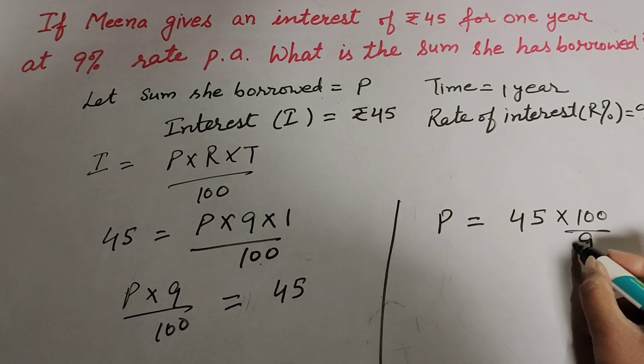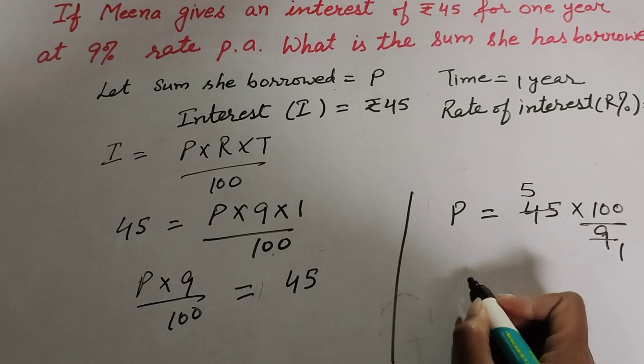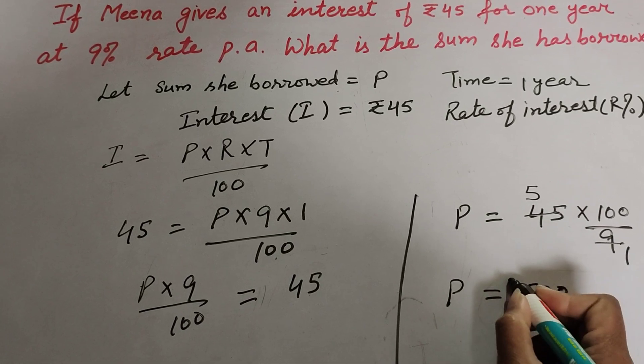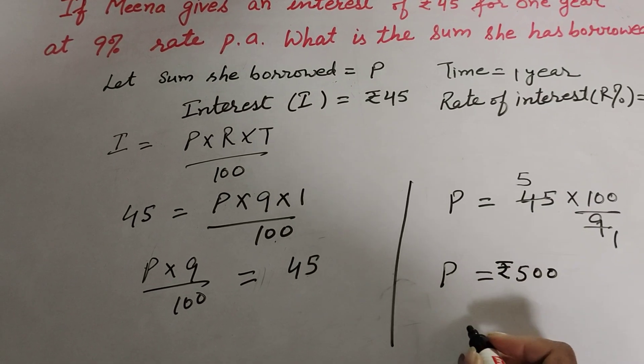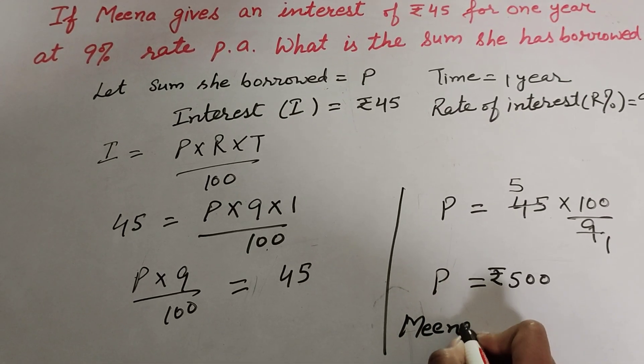Therefore P = 5 × 100 = 500. So she borrowed an amount of ₹500. Meena borrowed a sum equal to ₹500.